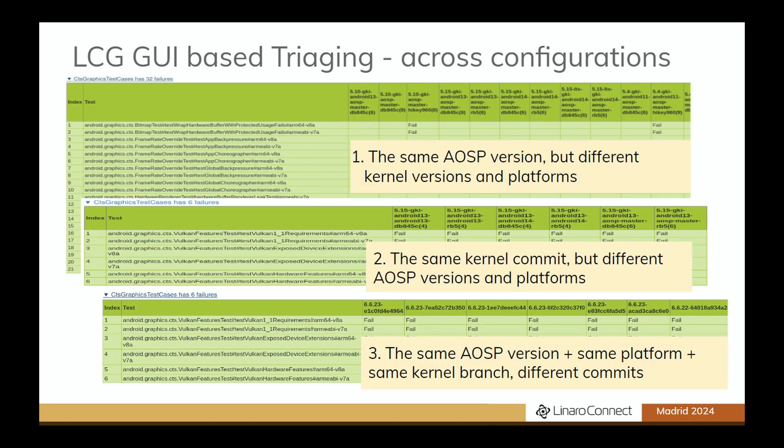Here are three examples about checking failures across configurations. The first example is about failures reported by the same AOSP version but different kernel versions and platforms. From the example, it can be seen that failures are reported by all the 5.4, 5.10, and 5.15 kernels, and there are also some failures only reported by the HiKey 960 device. The second example is about failures reported by the same kernel commit but different AOSP versions and platforms — failures reported by Android 13, Android 14, and AOSP main, on both DB845C and RB4L devices.